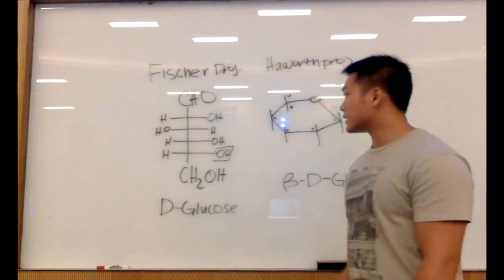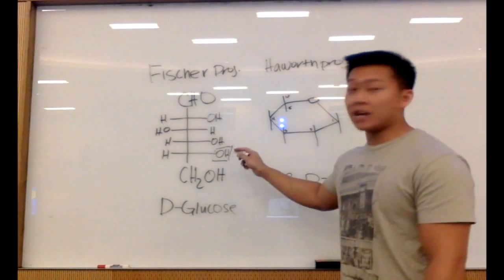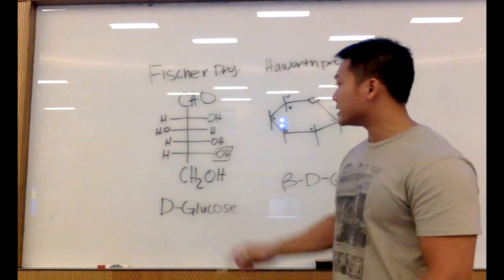We're going to start off with D-glucose. D-glucose being because the hydroxy group on our fifth carbon is on the right side.